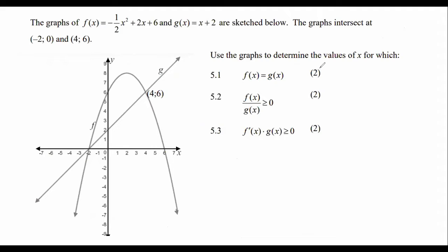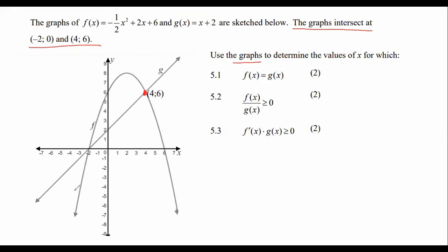Remember that it only gives us two marks, so these are going to be fairly quick, fairly easy. It says: use the graph to determine the values where the graphs are equal. Now some of you might look at the equations at the top and say, I know what to do — I'm just going to make them equal to each other. There's nothing wrong with that, but it is only two marks and they said use the graph. We can see these two graphs are intersecting at four and at negative two. So we can say X equals four or X equals negative two. That's an easy one.